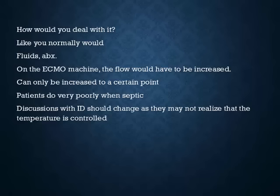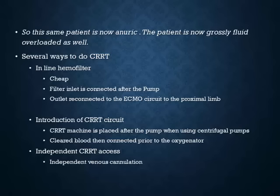For a septic patient on VA ECMO: give fluids and antibiotics. Sepsis is a high cardiac output state — patients become hypotensive, so you may need to increase the RPM to raise cardiac output to meet their demands. ECMO machines max out at 8–10 liters. Pressors can still be used when nothing else is left. As you increase flow, blood pressure may improve to an extent, but if you can't control the source or use the right antibiotics, time is limited. These patients do very poorly.